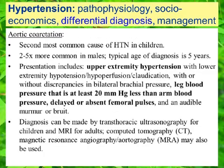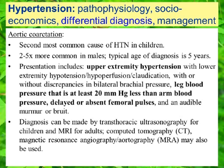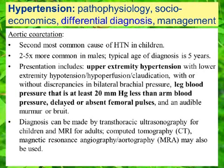In discussing the differential diagnosis of hypertension, we'll run through this list in alphabetical order and start with aortic coarctation. Aortic coarctation, or coarctation of the aorta, is the second most common cause of hypertension in children. It's two to five times more common in males, with a typical age of diagnosis of five years. Presentation typically includes upper extremity hypertension and leg blood pressure that is at least 20 millimeters of mercury less than arm blood pressure.